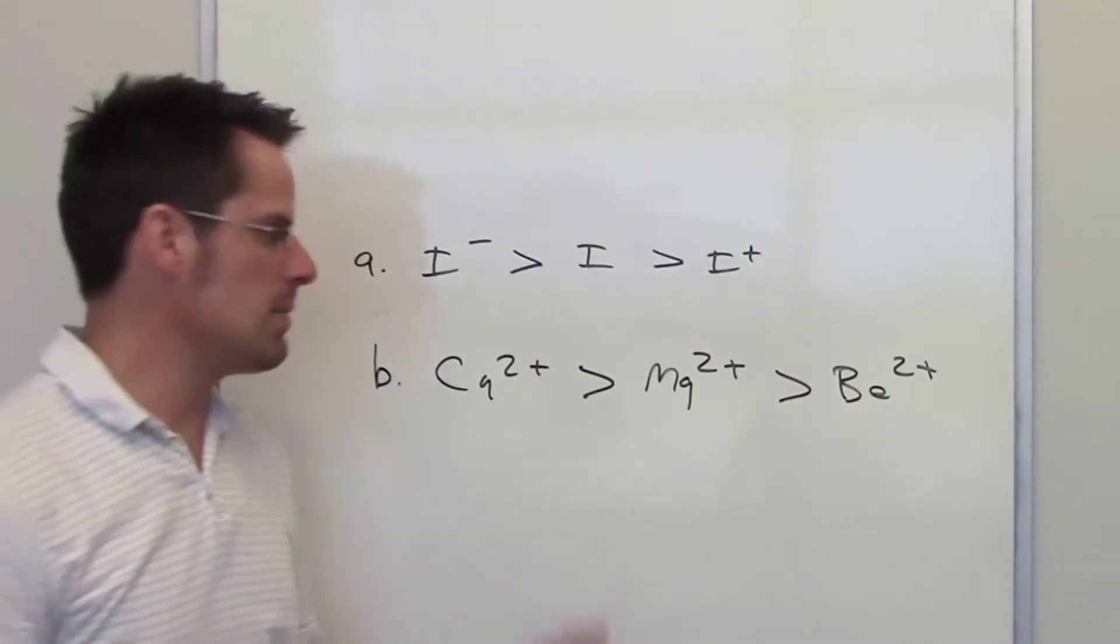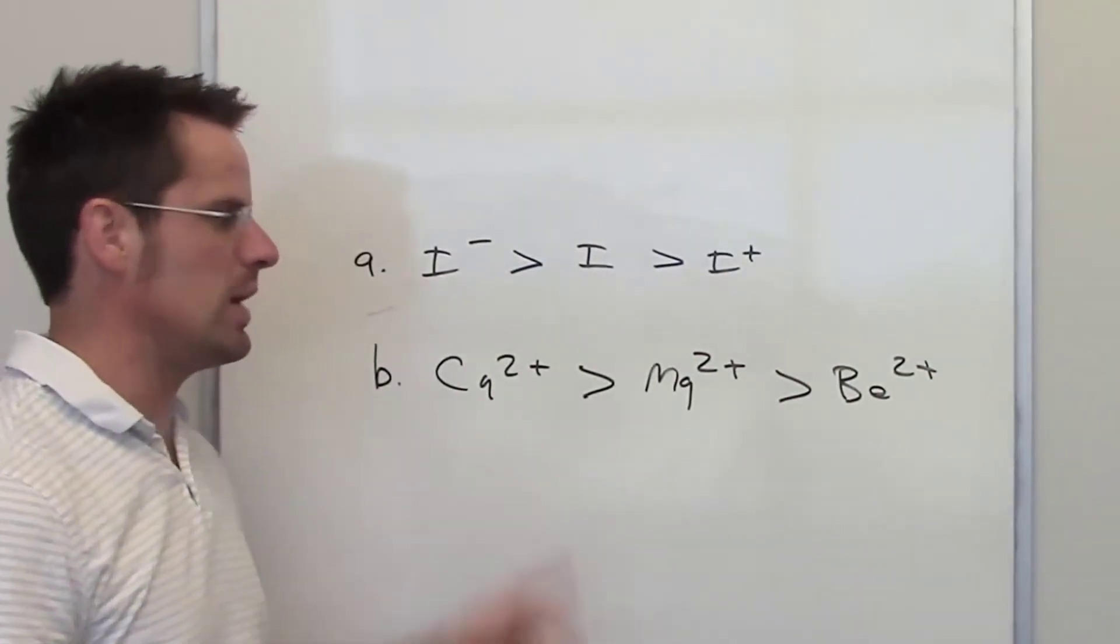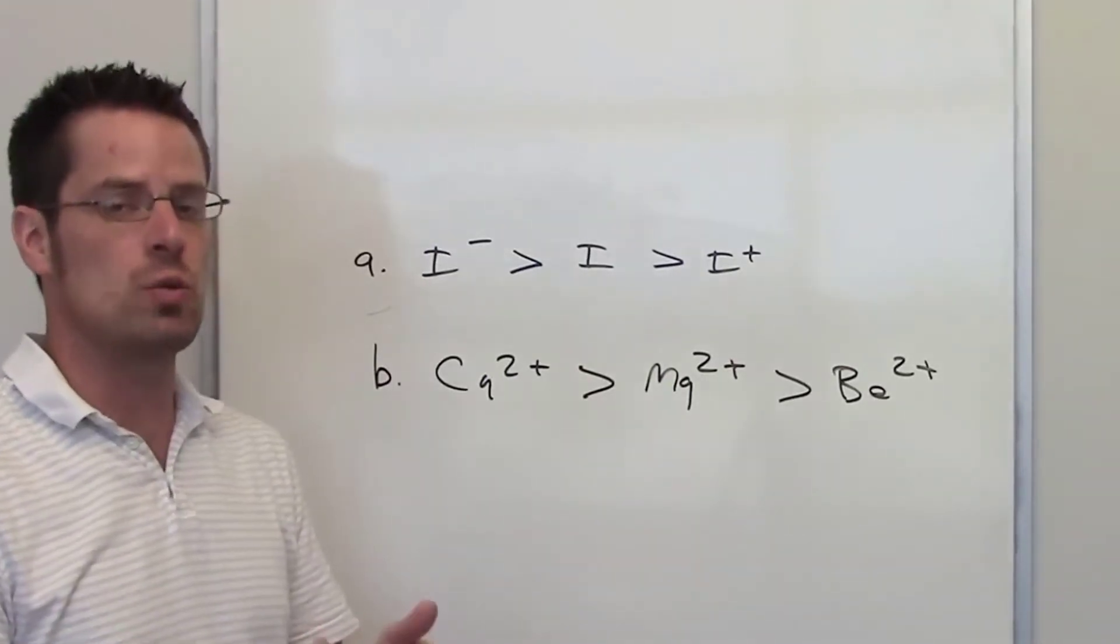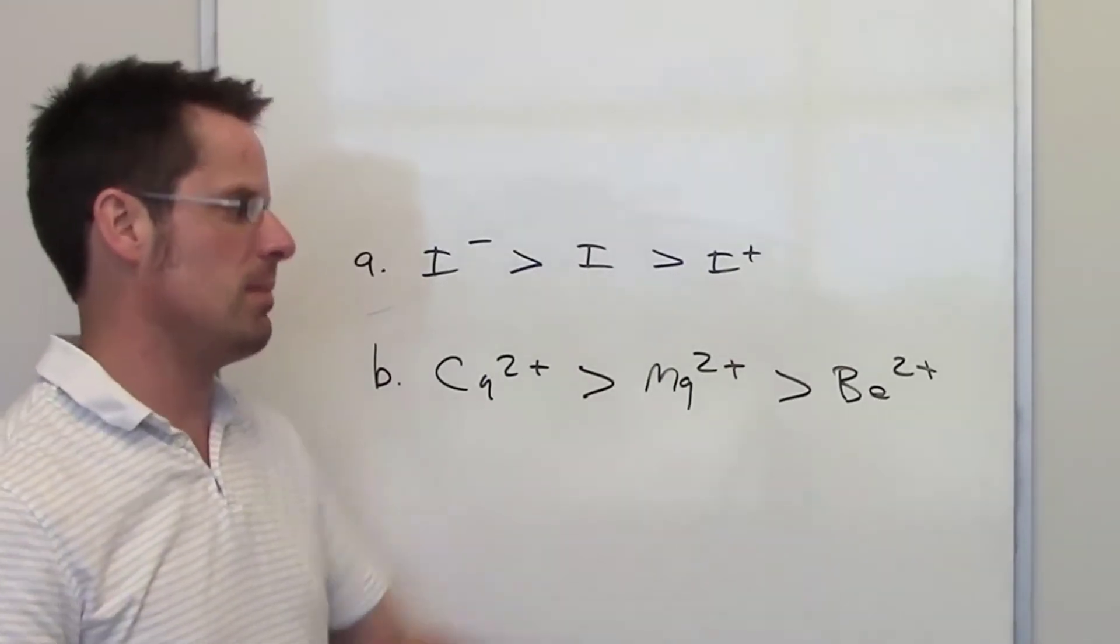As you look at the periodic table, you'll notice that calcium is located directly beneath magnesium on the periodic table, which is located directly beneath beryllium on the periodic table.